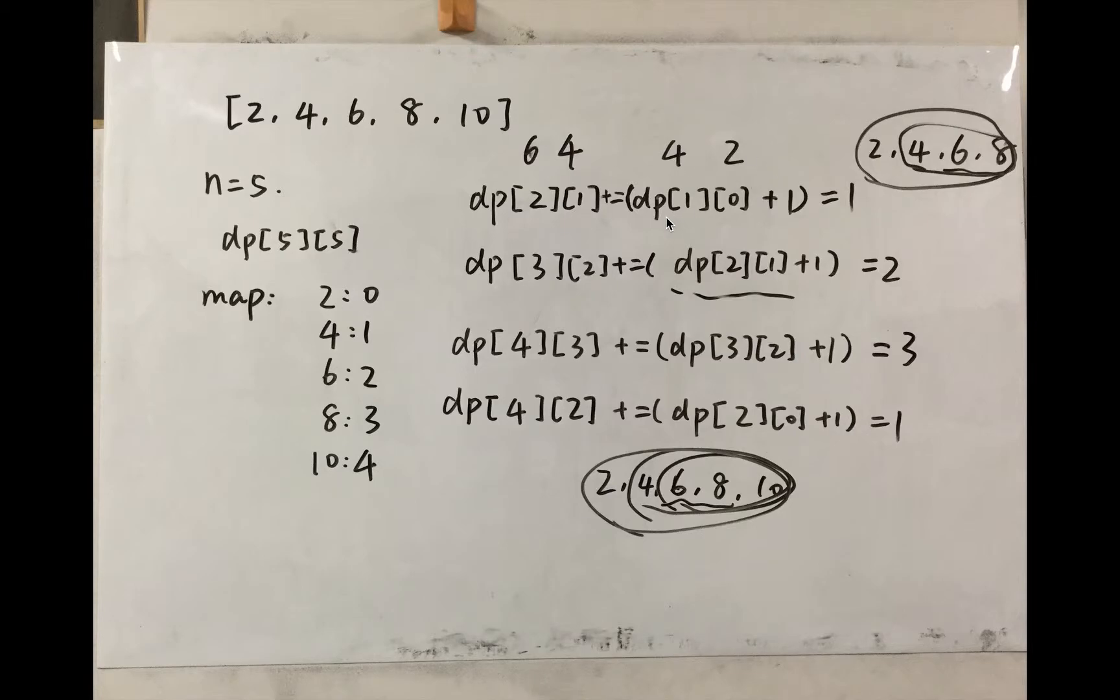So we will use the number of arithmetic slices ended with 2, 4 and 2 and plus 1. Now once we have this one, we can make up another arithmetic slices. We just actually make one more.